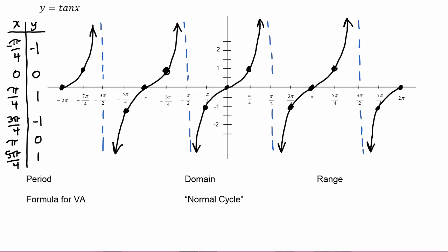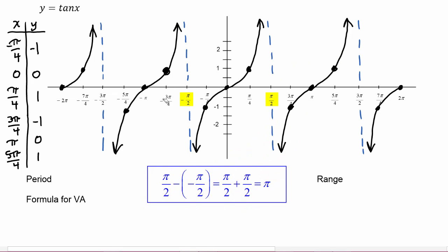Next, we can look at some attributes of the graph. We can get the period by subtracting a starting point from an endpoint of an interval: pi over two minus negative pi over two equals pi over two plus pi over two, which means the period is equal to pi. That's different from sine and cosine, whose periods are two pi — the tangent function has a shorter period of pi.